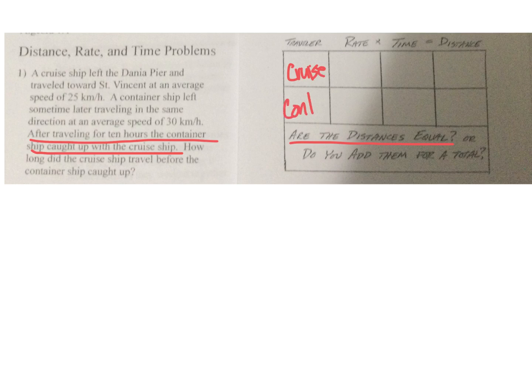We've got a cruise ship and a container ship. The cruise ship traveled at 25 kilometers an hour for some amount of time T. The container ship traveled at 30 kilometers an hour for 10 hours. Rate times time equals distance, so we multiply: 25T and 300. These distances are equal, so my equation becomes 25T equals 300.